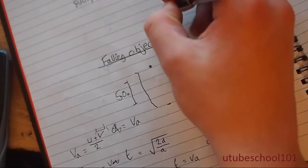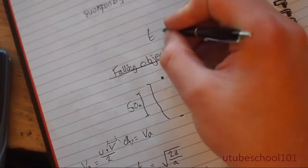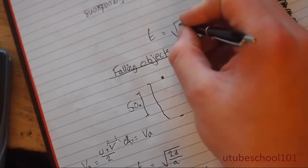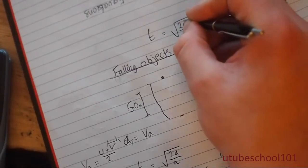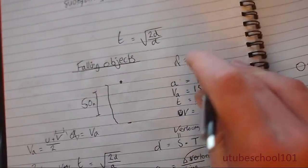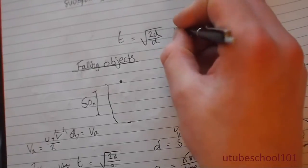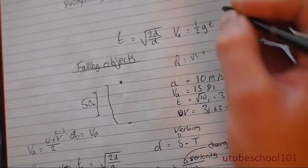I find these equations quite useful to make notes and remember. So time is the square root of 2 over A. I'll probably make a video about why these equations actually work and how you get them. The average velocity, vA is half times g t.